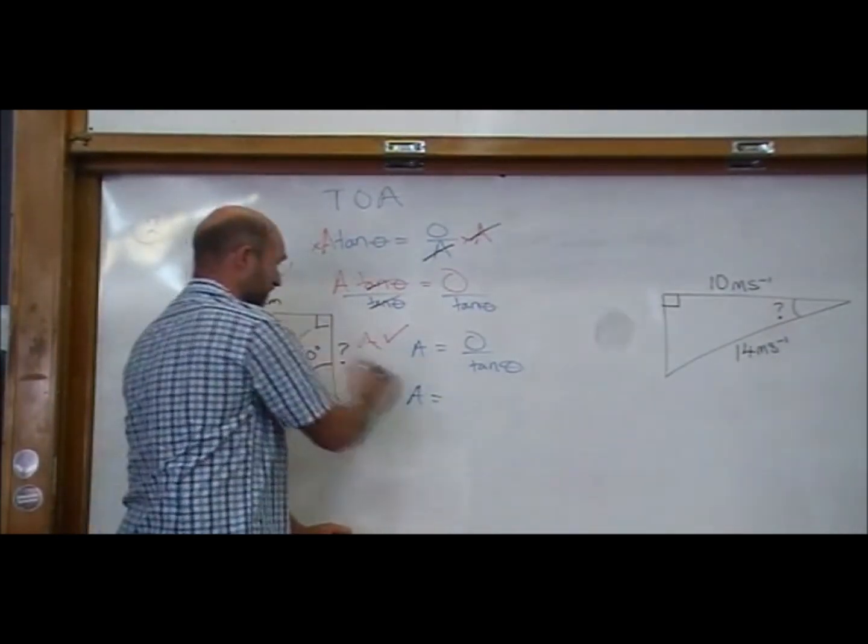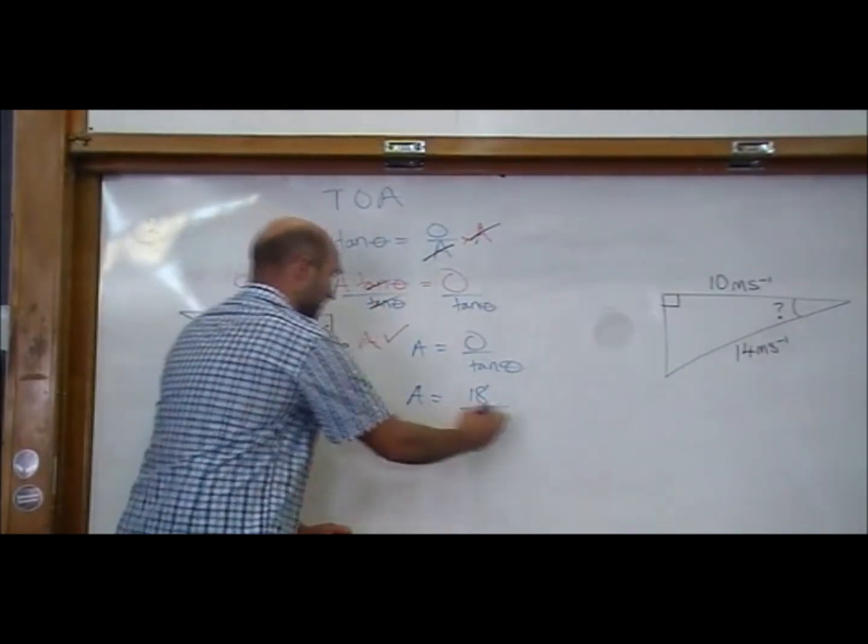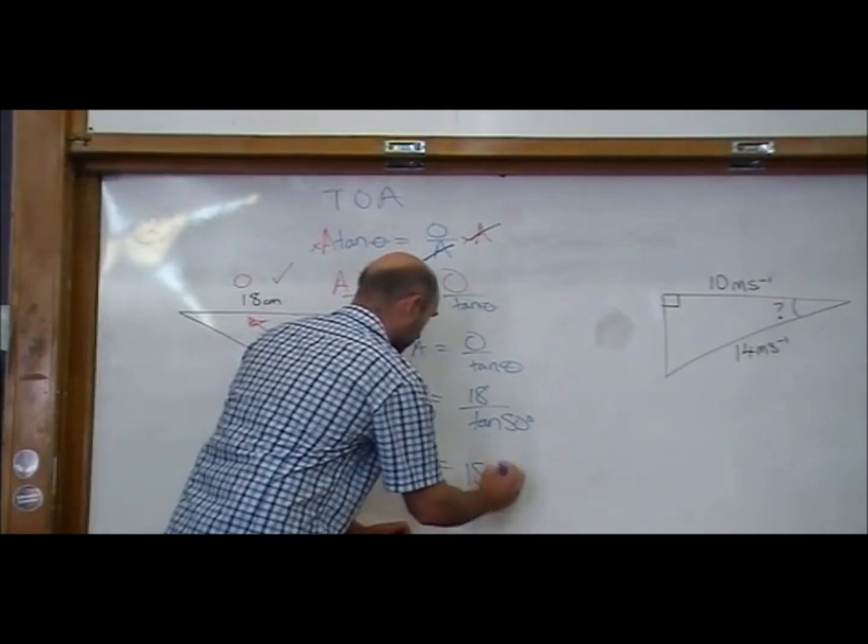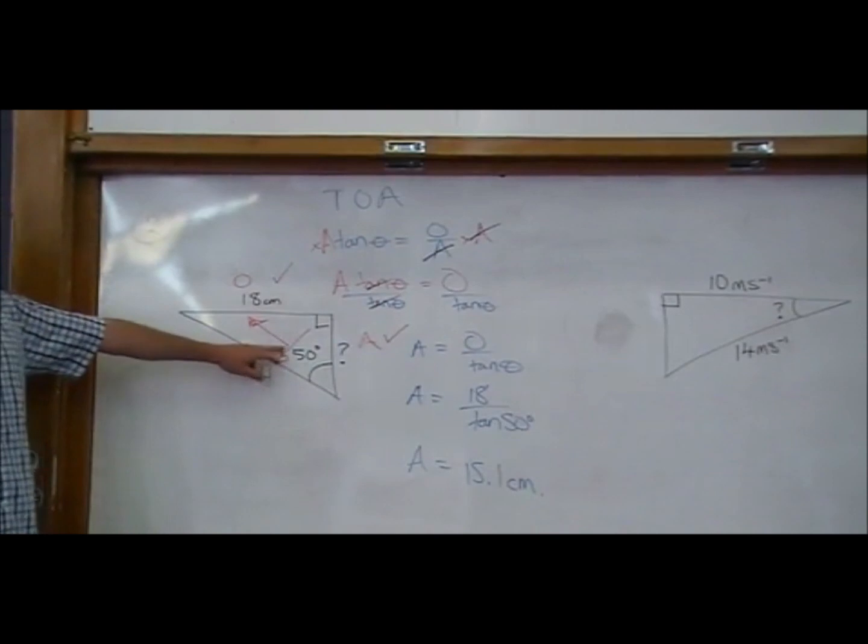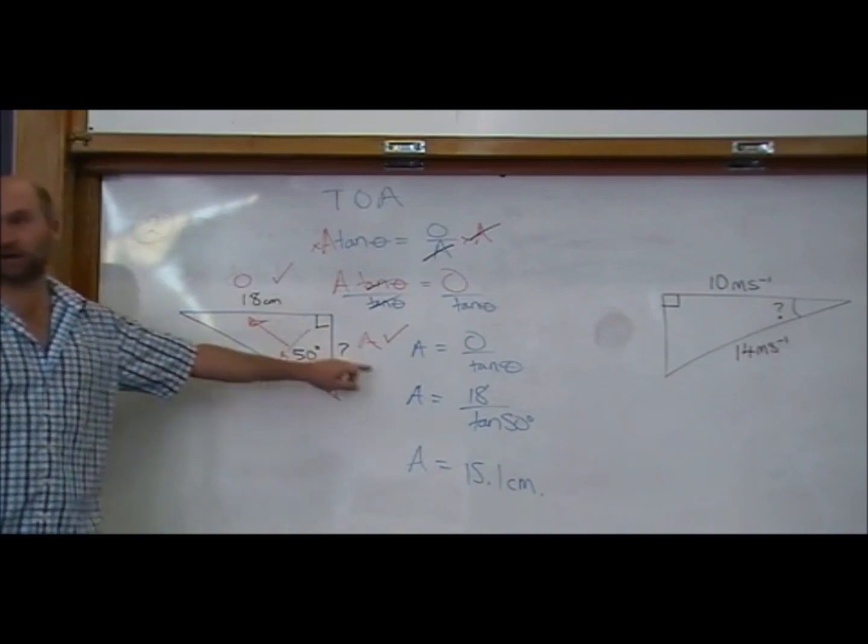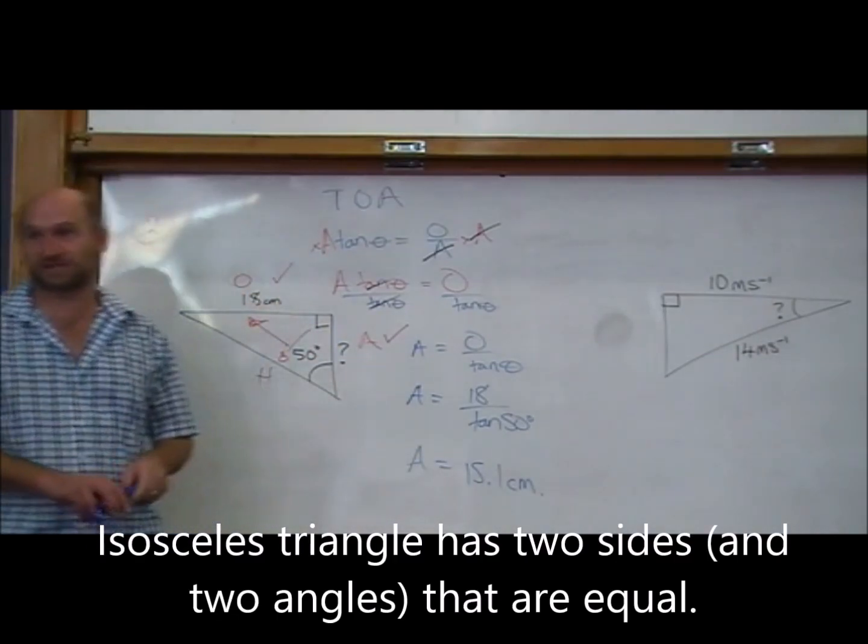Let's put some numbers in. A is equal to 18 over tan theta. 15.1 centimetres. Does it sound right? Yeah, 50 degrees is pretty close to 45. And so we're expecting these two sides. It's going to be close to an isosceles triangle. So if one's 18, the other could be 15. We're happy. Seems sensible.